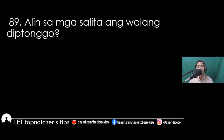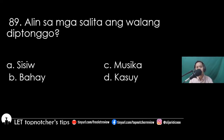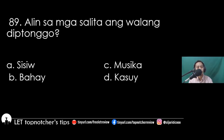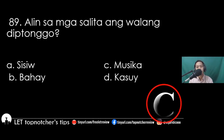Item 89 (Filipino): Alin sa mga salita ang walang diptonggo? A) sisiyong, B) bahay, C) musika, D) kasuy. Ang diptonggo ay nagtataglay ng malapatinig na W at Y. Ang walang diptonggo ay ang musika.